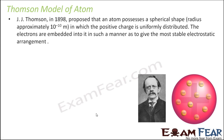So let's study the first model, the Thomson model. In 1898, J. J. Thomson proposed that the atom has a spherical shape of radius 10 to the power minus 10 meters — such a small size — in which the positive charge is uniformly distributed and the electrons are embedded into it in such a manner that it gives the most stable electrostatic arrangement, bound together by electrostatic force of attraction.